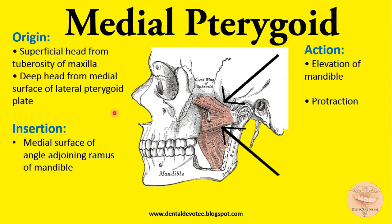Now moving on to the medial pterygoid. Its origin is from the tuberosity of the maxilla. The superficial head originates from the maxillary tuberosity and the deep head originates from the medial surface of the lateral pterygoid plate. It is inserted into the medial surface of the ramus of the mandible.